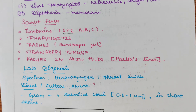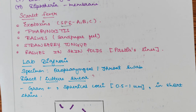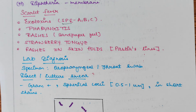If these features are seen in a patient, it means the patient is suffering from scarlet fever. Also, rashes in between the skin folds will be seen, which are known as Pastia's lines.